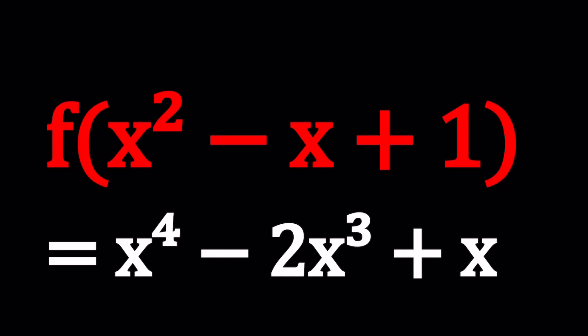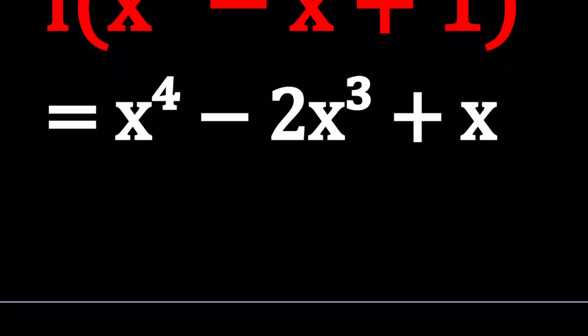Hello everyone. In this video we're going to be solving a nice homemade functional equation. We have f(x² - x + 1) = x⁴ - 2x³ + x, and we're going to be solving for f. I'll be presenting two methods and I think both methods are really cool, but at the end you'll decide which one you like better. So let us know in the comment section down below.